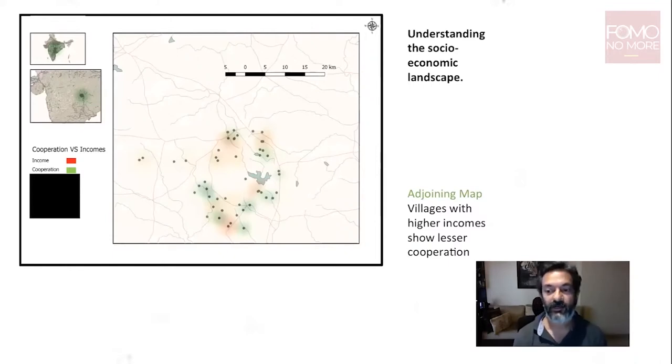What is important is that when you understand the socio-economics of the landscape, so say this is a territorial forest to the east of the Taropa Tiger Reserve, the villages which had higher incomes actually were not so cooperative when it comes to conservation. In fact, the consumption of wood was also higher than villages with lower incomes.